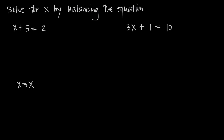We can start manipulating this equation by, for example, multiplying both sides by 5. If we multiply the left hand side by 5, this equation is now out of balance unless we also multiply the right hand side by 5. Now the equation is balanced again because we've multiplied both sides by 5. So in other words, whatever you do to one side of the equation, you always have to do to the other side.